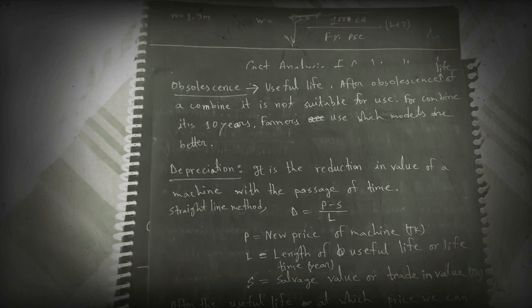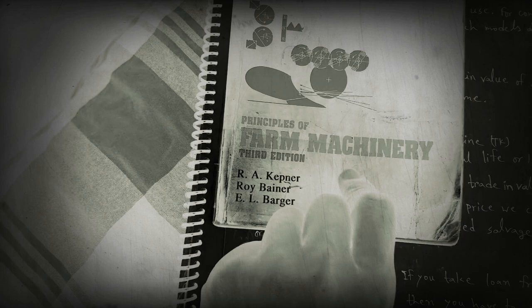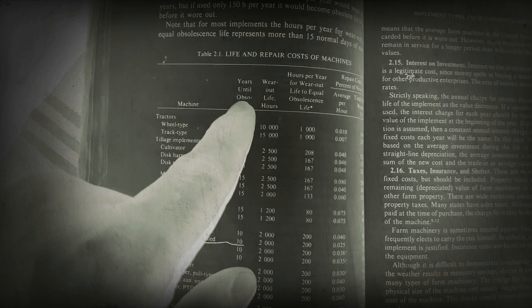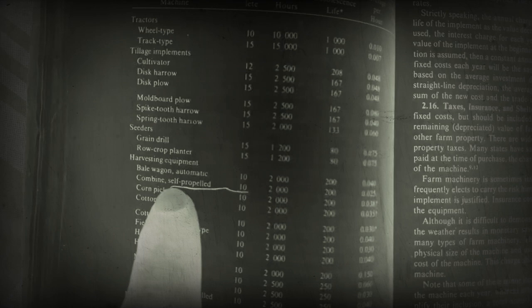These values can be found in the book 'Principles of Farm Machinery' by Kepner, Bainer, and Barger. The table shows years until obsolete: for tractors — wheel type 10 years, track type 15 years; moldboard plow 15 years; and combine self-propelled 10 years.